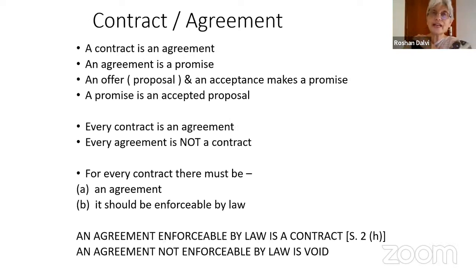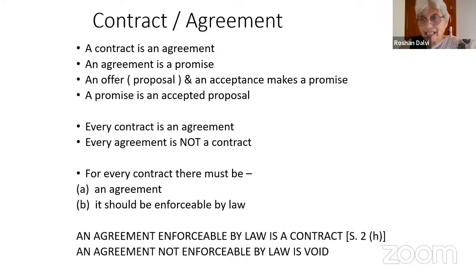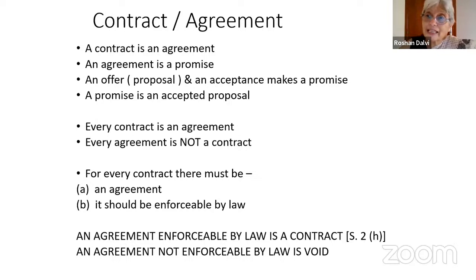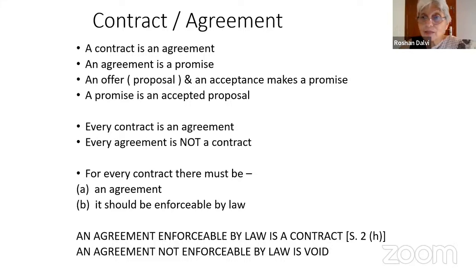Contract and agreement is what must be first understood. Two people may make an agreement — to go to dance, to have dinner. These are not enforceable at law. They remain agreements, but they are not contracts. Contract is a little more than agreement. All agreements are not contracts, but all contracts are agreements. The basis is that a contract is an agreement.